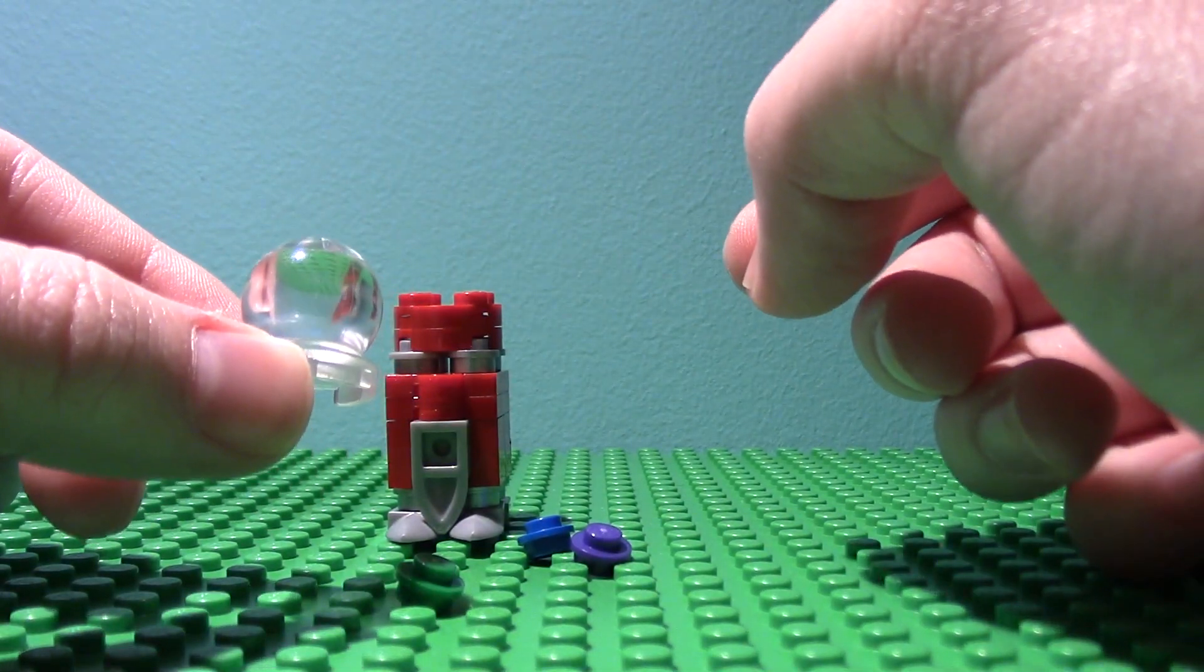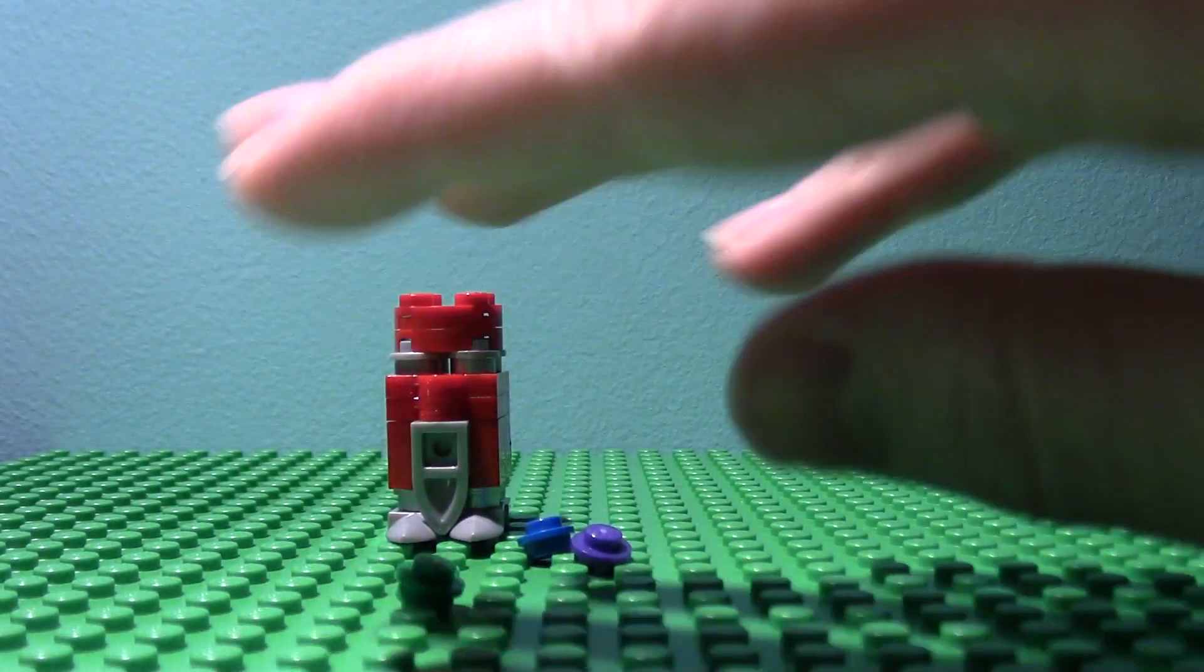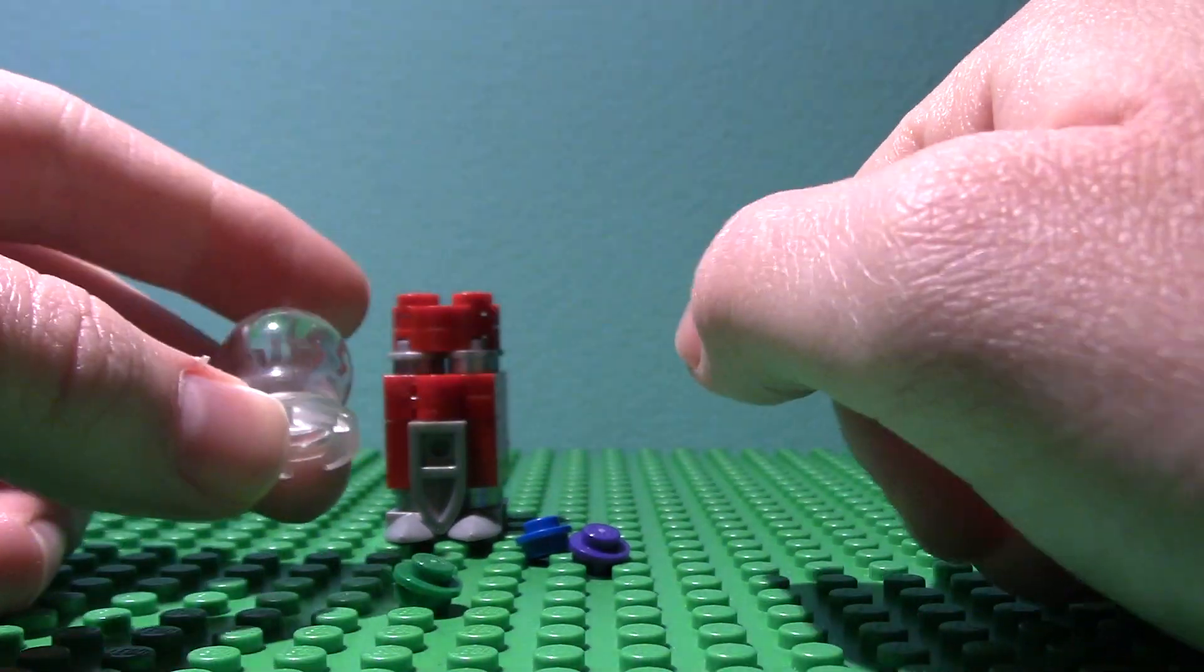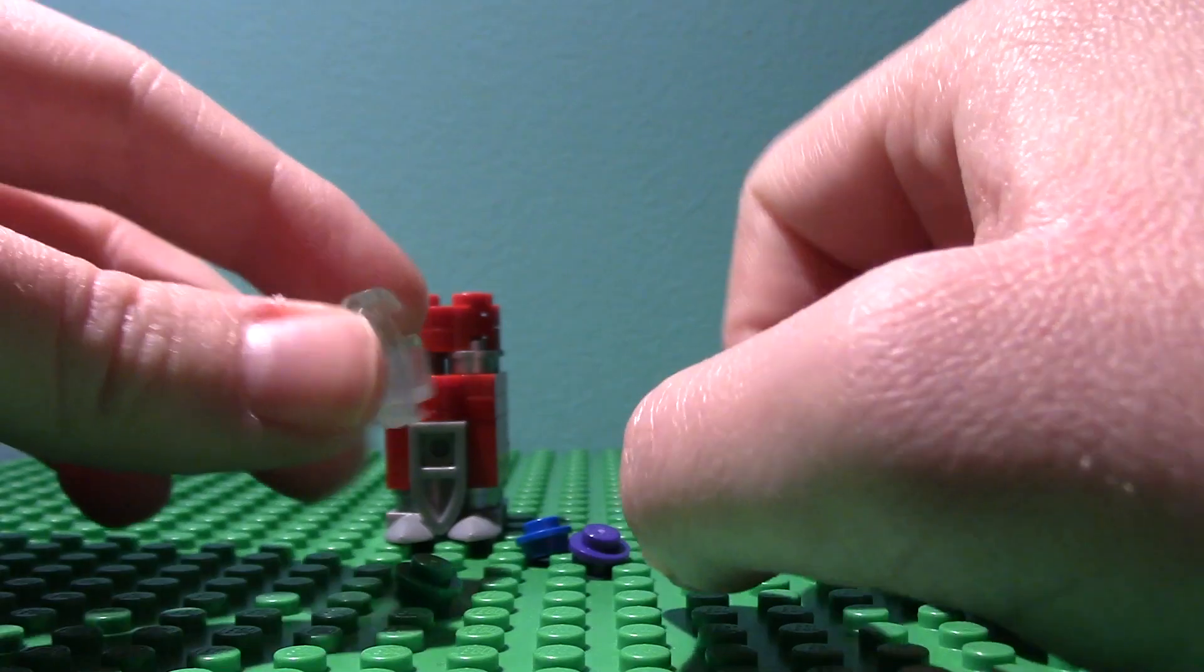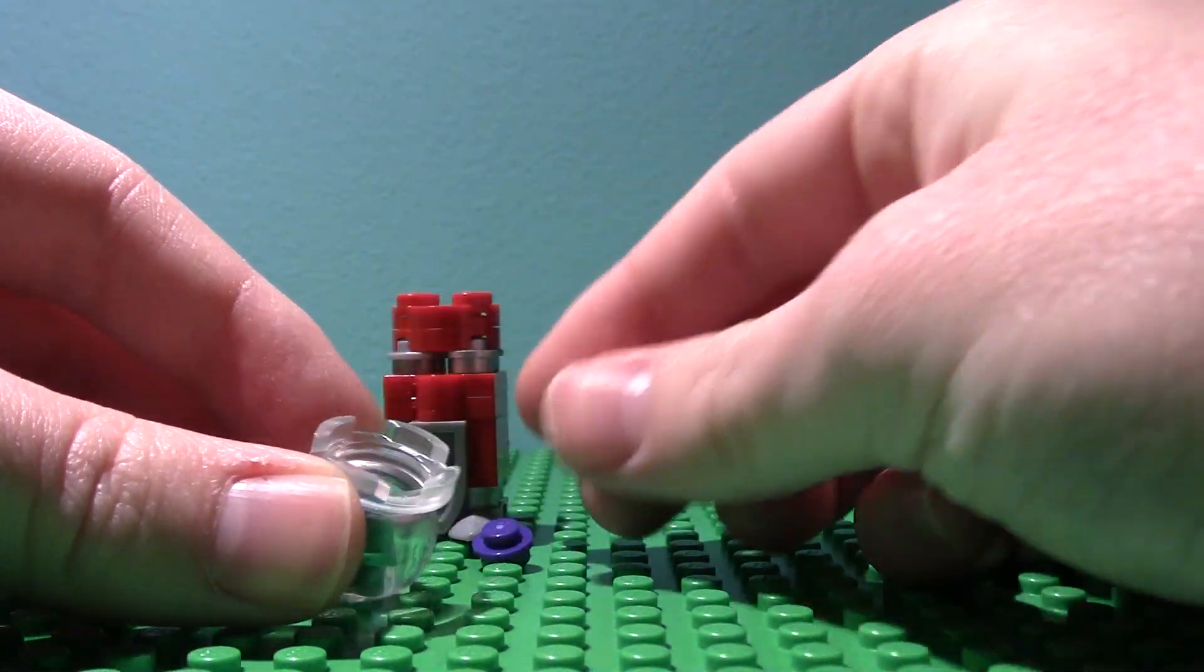I got this one from the speeder with the sand blue things. Inside was a white minifigure head with printing on it. Then you want to put a green stud in there, a blue stud in there, and then a dark purple stud in there.